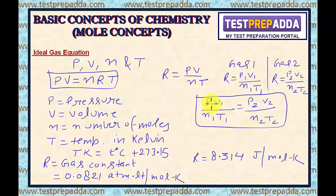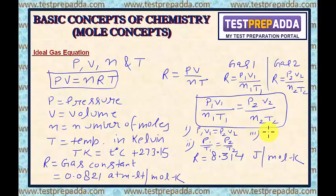With the help of this combined equation, many relations can be derived. If the number of moles and temperature are the same for two gases, then P₁V₁ = P₂V₂. If volume and number of moles are the same, then P₁/T₁ = P₂/T₂. If pressure and number of moles are the same, then V₁/T₁ = V₂/T₂.